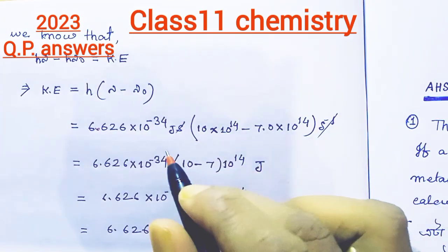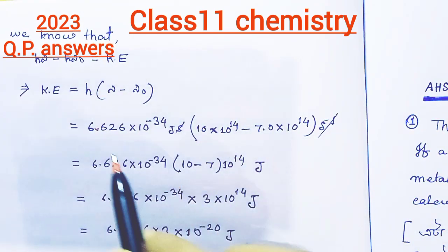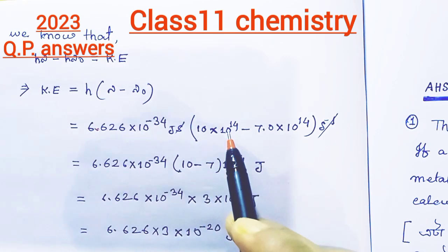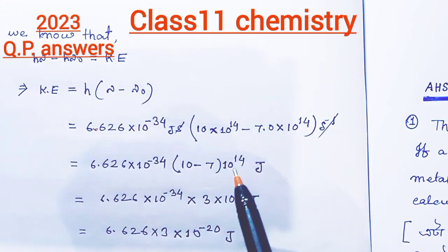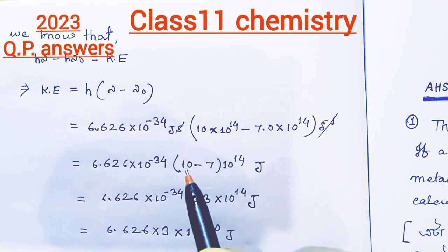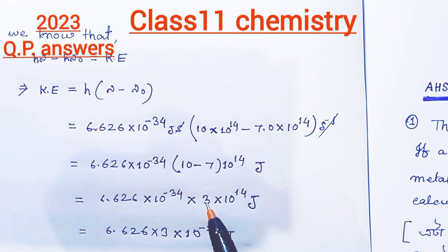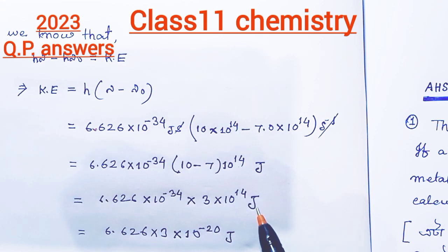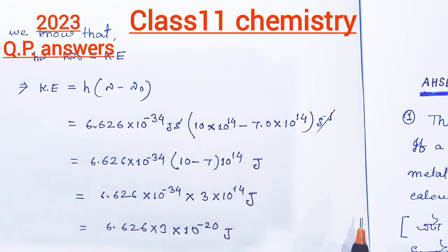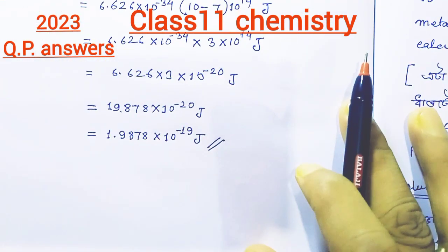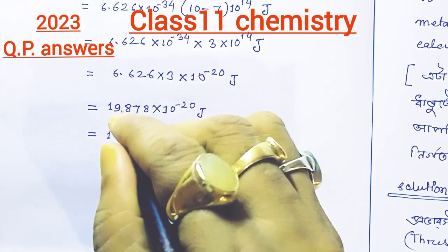Taking 10^14 as common factor, we get 10 to the power 14 joules. So the next, it will be 19 point something J.